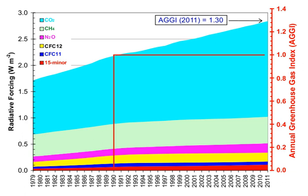Aside from water vapor, which has a residence time of about nine days, major greenhouse gases are well mixed and take many years to leave the atmosphere. Although it is not easy to know with precision how long it takes greenhouse gases to leave the atmosphere, there are estimates for the principal greenhouse gases.